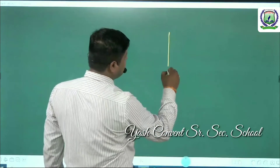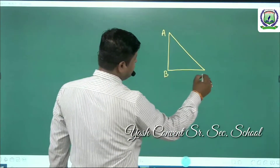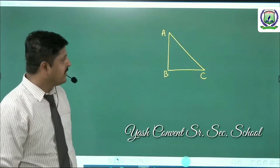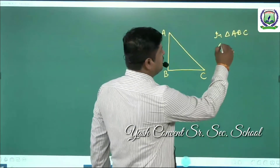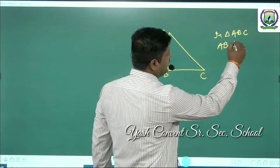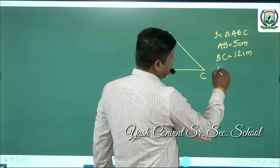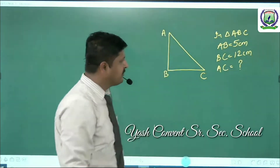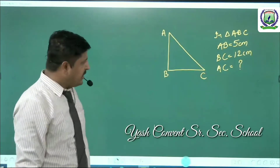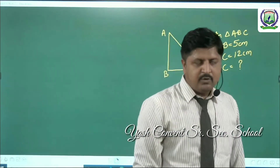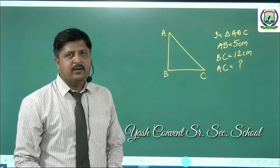Let us take an example. Suppose this is a right-angle triangle named ABC. If we take triangle ABC, suppose AB is equal to 5 centimeters, BC is equal to 12 centimeters, and we have to calculate AC. Or suppose AB and AC are given and we have to calculate BC. We already know that in a right-angle triangle, if we know two sides, there is a technique for finding the third side.